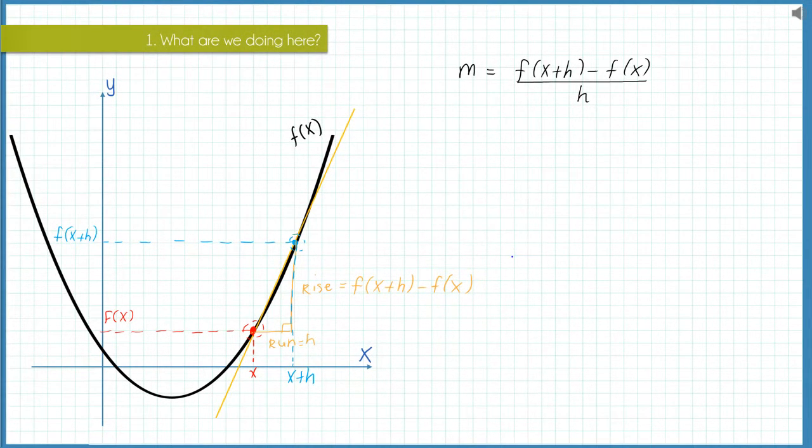We saw in the last video that the closer this second blue point here is in proximity to the red point of interest, the closer the secant line will approximate a tangent line to the curve at this red point, which of course is the derivative of the function at that point which is f dash x.